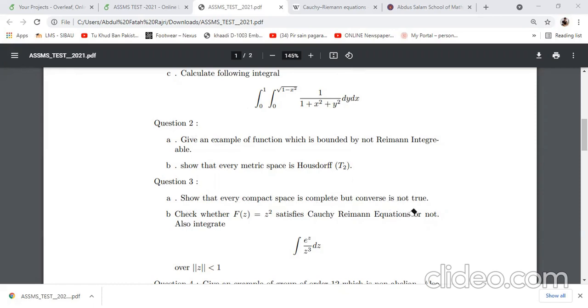In compactness, every compact metric space is sequentially compact. Take a Cauchy sequence. Because it is compact, there exists a convergent subsequence. From there you have to show that this Cauchy sequence is convergent. Why the converse is not true? Think of R and think of some metric. R is complete but R is not compact.